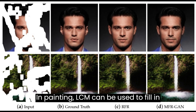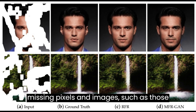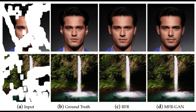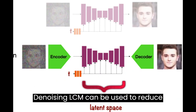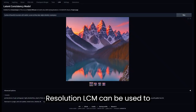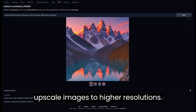In painting, LCM can be used to fill in missing pixels in images, such as those that have been damaged or corrupted. Denoising — LCM can be used to reduce noise in images. Super-resolution — LCM can be used to upscale images to higher resolutions.